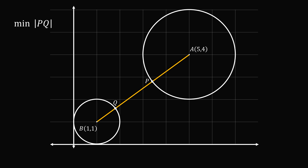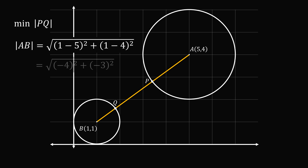We can find the length of AB using the distance formula: the square root of (1 minus 5) squared plus (1 minus 4) squared. That gives us the square root of (negative 4) squared plus (negative 3) squared, which works out to 5.